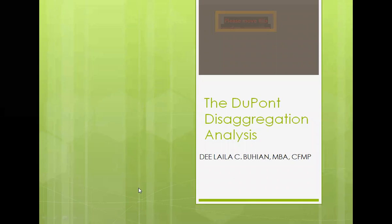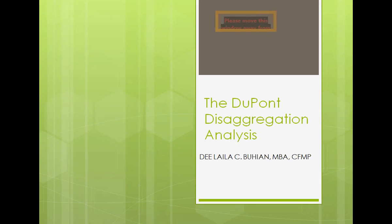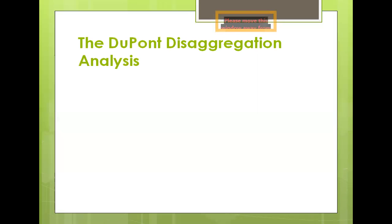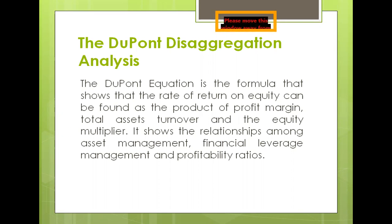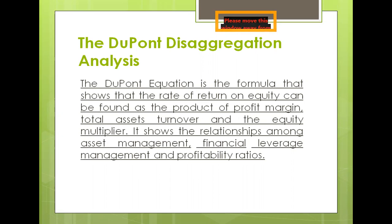Hello there. Today, we will be talking about the DuPont disaggregation analysis. The DuPont disaggregation analysis has this equation, the DuPont equation, that is the formula that shows that the rate of return on equity can be found as a product of profit margin, total assets turnover, and the equity multiplier. It shows the relationships among asset management, financial leverage management, and profitability ratios.